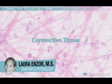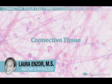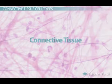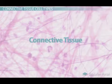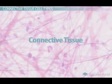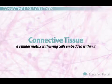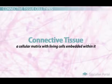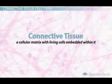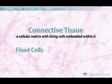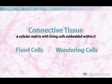Connective tissue does just what its name implies — it connects things in our body together. This general tissue ranges from anything to bone, to blood, to fat. Connective tissue is defined as a cellular matrix with living cells embedded within it. The cells that make up connective tissue are separated into two main categories: fixed cells and wandering cells. These cells are aptly named.